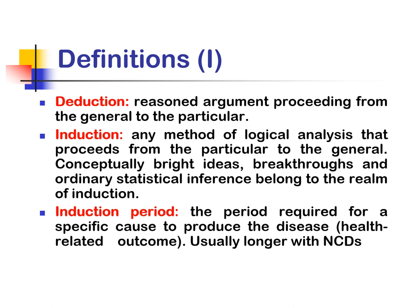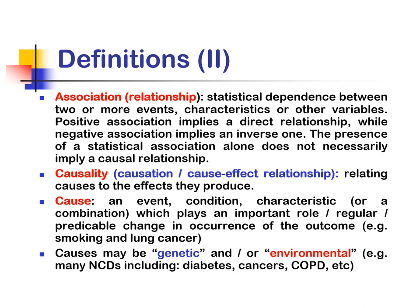Then we have an induction period — the period required for a specific cause to produce the disease, which is usually longer with non-communicable diseases. Then we have association or relationship: statistical dependence between two or more events, characteristics, or variables. Positive association implies a direct relationship while negative association implies an inverse relationship.